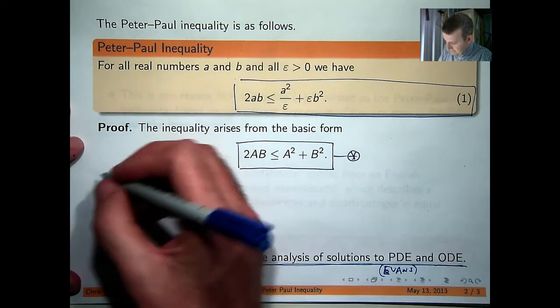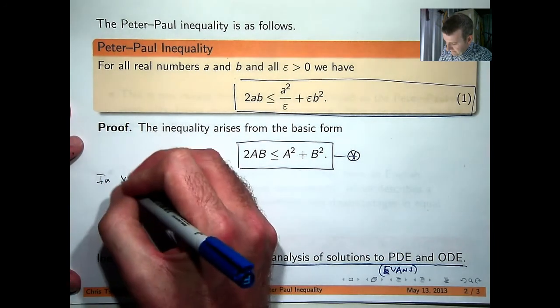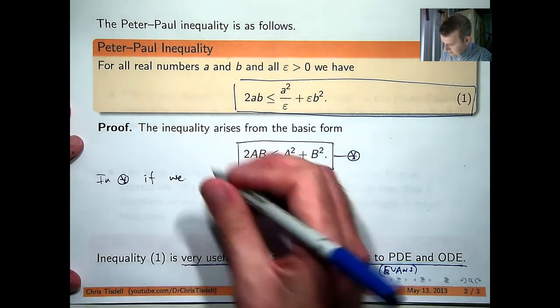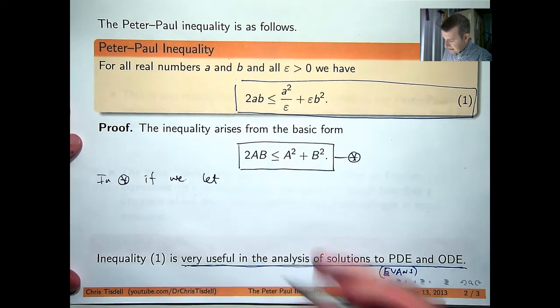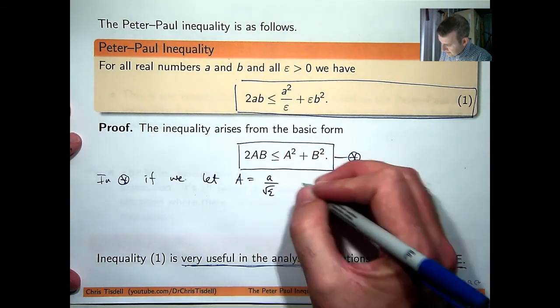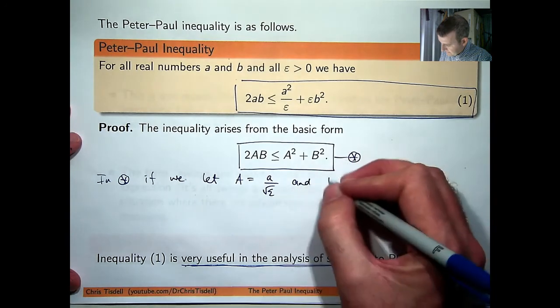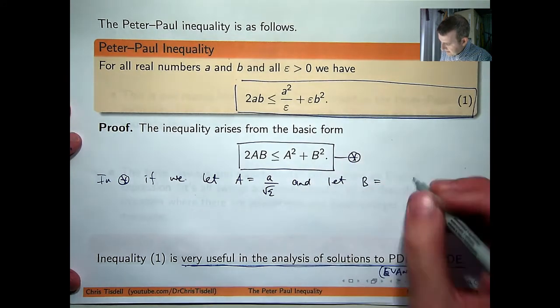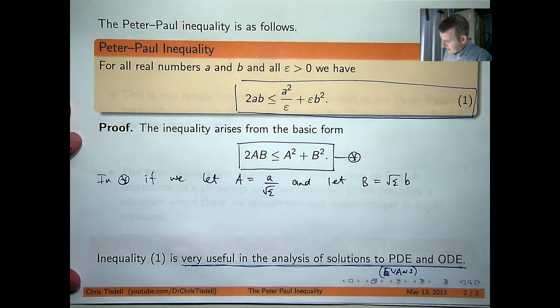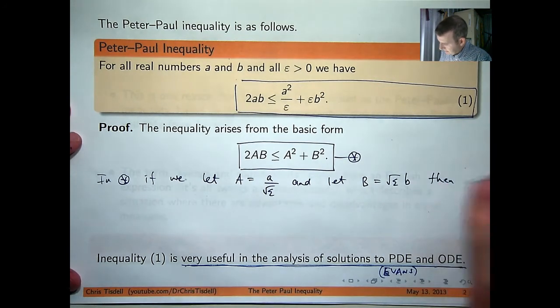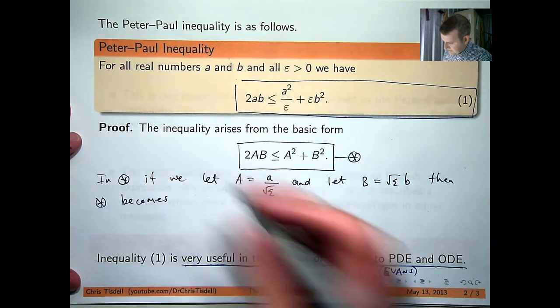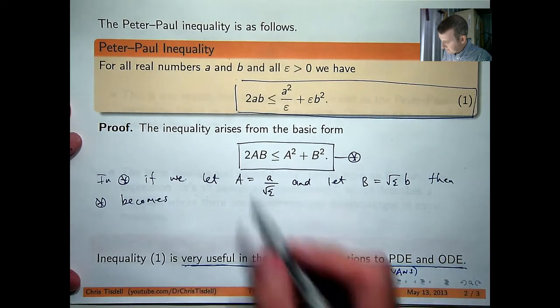Now, if we let, say, capital A be little a on root epsilon, let capital B be root epsilon times little b, then this expression becomes, on the left-hand side, you're going to get 2 times that times that, so the root epsilons will cancel out.